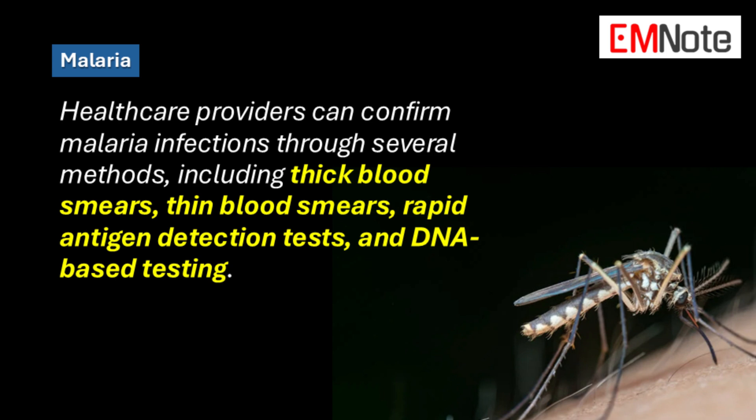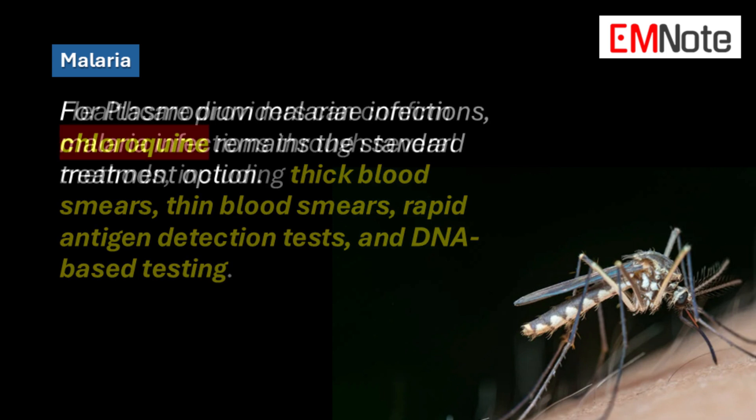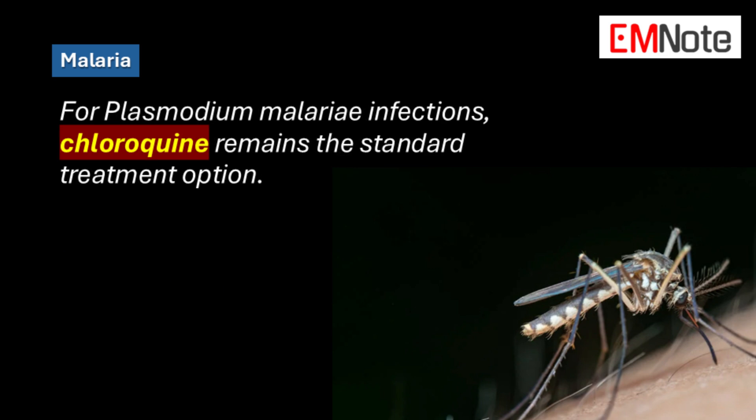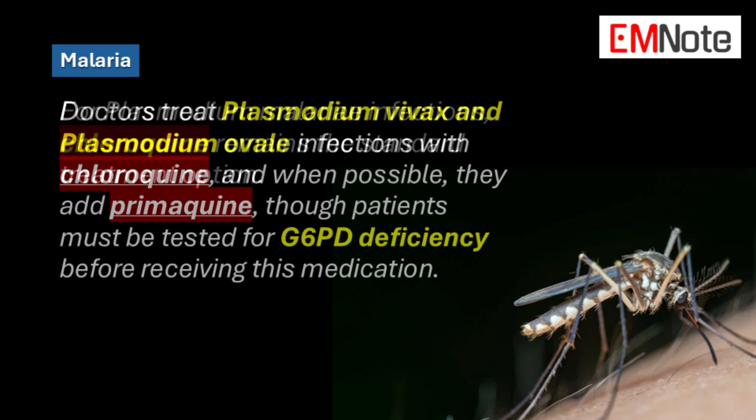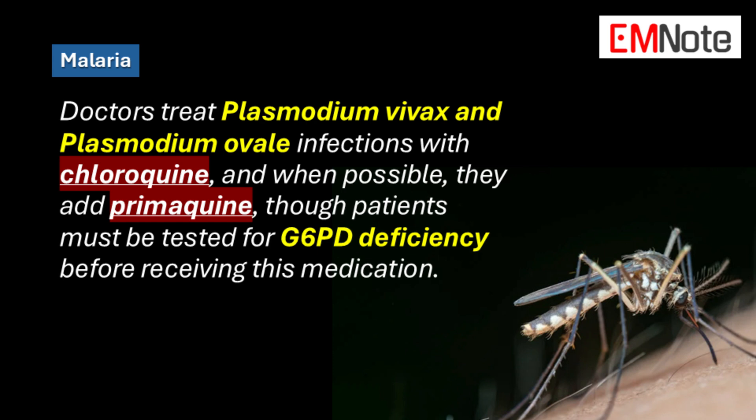Healthcare providers can confirm malaria infections through several methods, including thick blood smears, thin blood smears, rapid antigen detection tests, and DNA-based testing. For Plasmodium malariae infections, chloroquine remains the standard treatment. Doctors treat Plasmodium vivax and Plasmodium ovale infections with chloroquine, and when possible add primaquine, though patients must be tested for G6PD deficiency before receiving this medication.